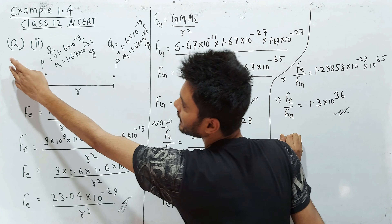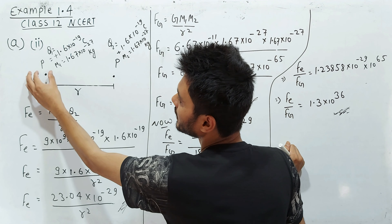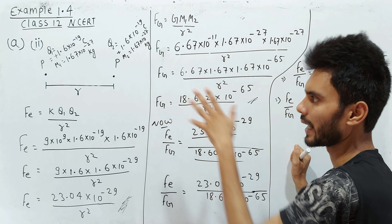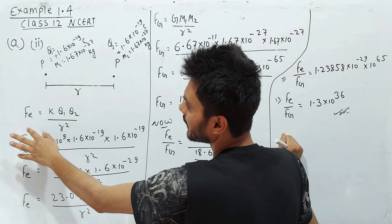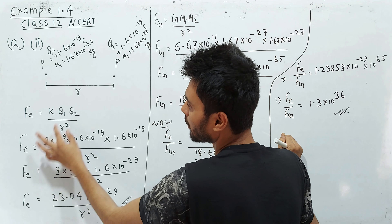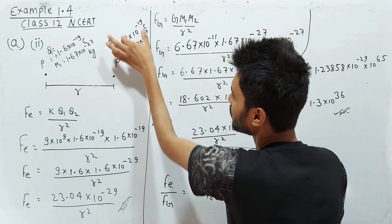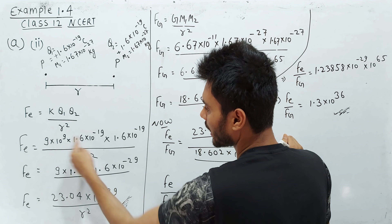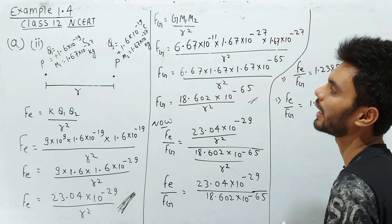Now we move to Question 2a, where we have two protons instead of an electron and a proton. We calculate the electric force between them using Coulomb's law: F = k·q1·q2 / r². Here k = 9×10⁹, q1 is the charge of the first proton, and q2 is the charge of the second proton — both having the same value. After solving, the electric force comes out to a specific value.